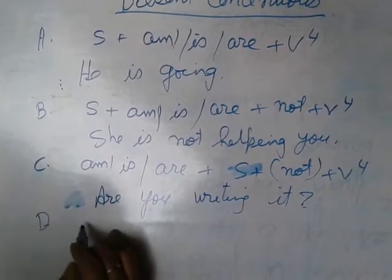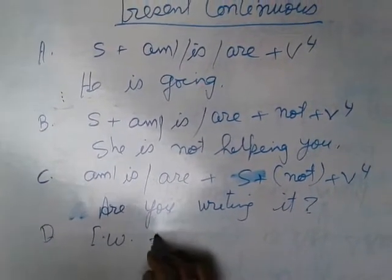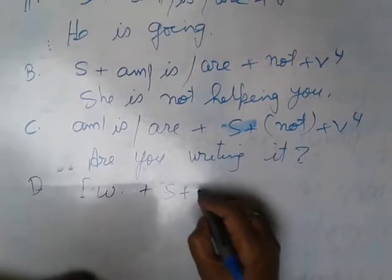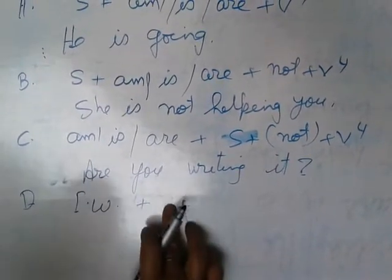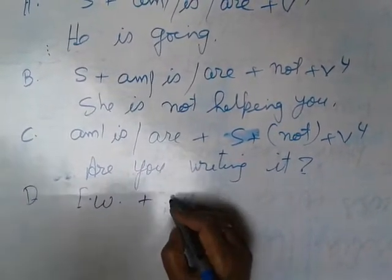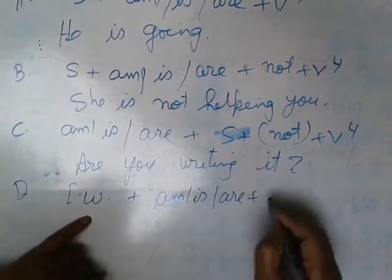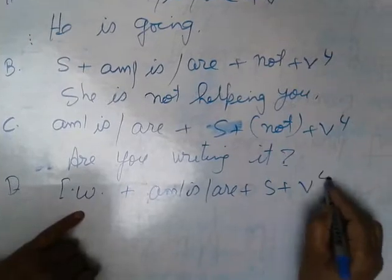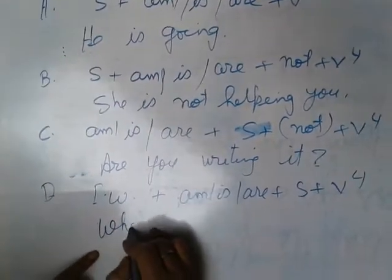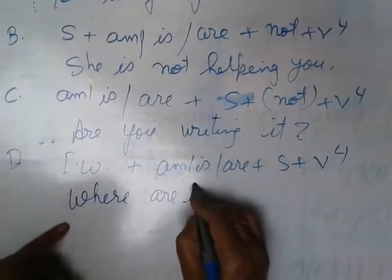Next is interrogative word plus am/is/are plus subject plus V4. Where are they going?